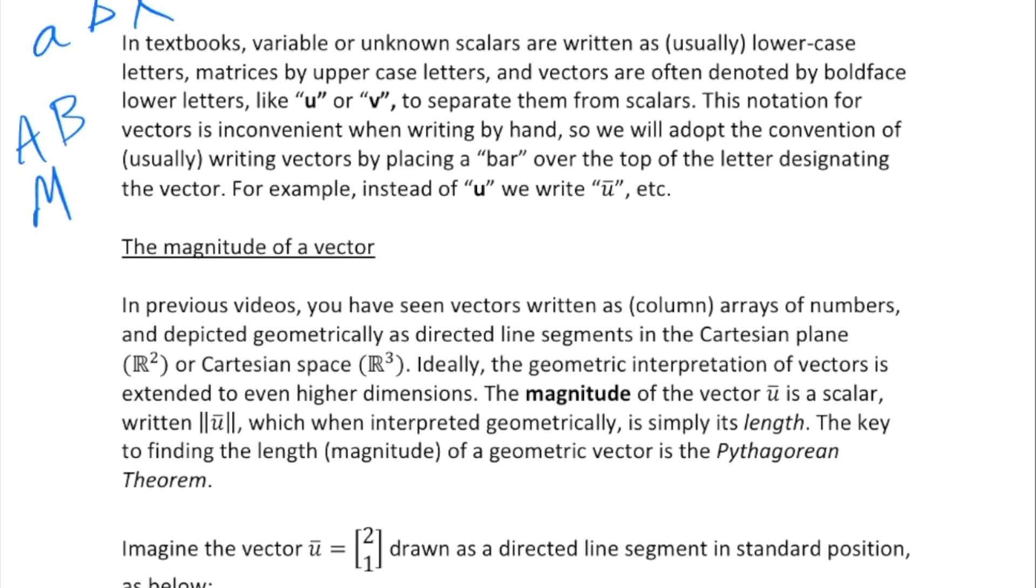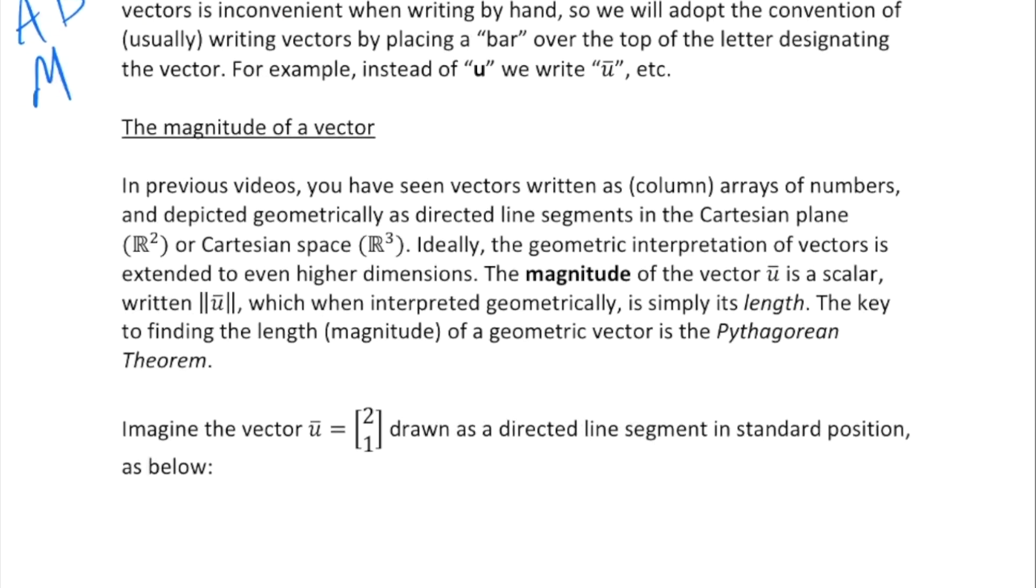Where you can't really handwrite those, we're going to create a different notation that's good for handwritten vectors. What we're going to do is just put a bar over the top of the letter designating the vector, and that will designate a vector.